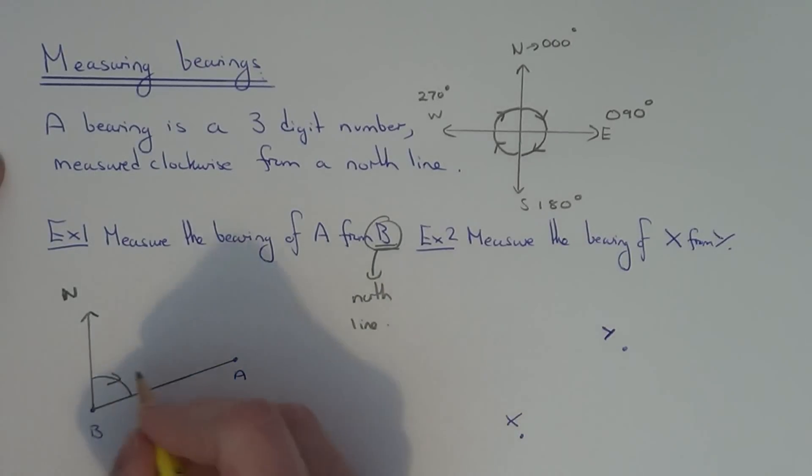But remember it has to be a three digit number. So we need to put zero, 72. And that's our bearing of A from B.